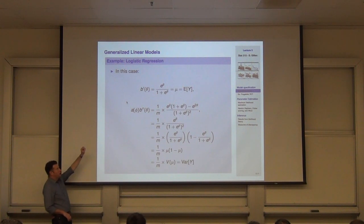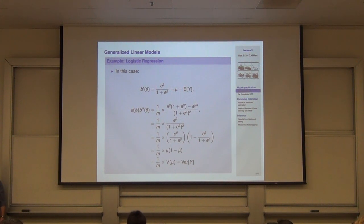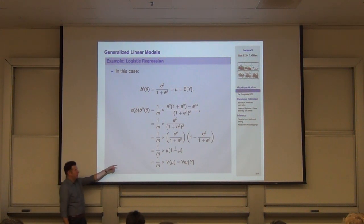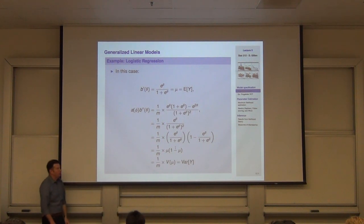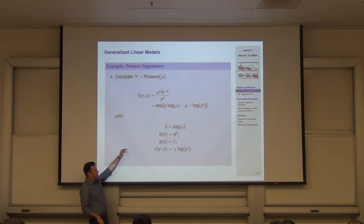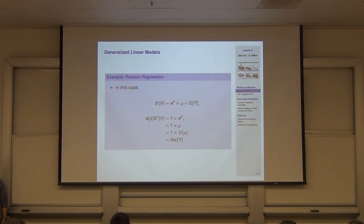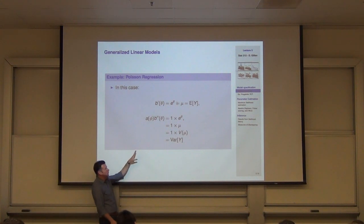Checking that b'(theta) gives back the mean mu — yes, that's just the expit function. And A(phi) times b''(theta) should give back mu(1 - mu) divided by the sample size m — the Bernoulli variance divided by m — since we've standardized to the sample proportion. For the Poisson distribution, the canonical link is the log, A(phi) equals one, and the mean and variance are both equal to mu.